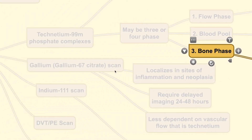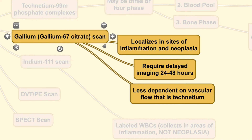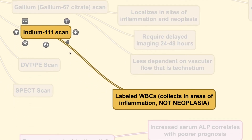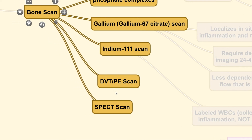Another radioactive agent is gallium-67 citrate, which localizes in sites of inflammation and neoplasia, requires delayed imaging of around 24 to 48 hours, and is less dependent on vascular flow than technetium. The third commonly used agent is indium-111, where white blood cells are labeled. Indium-111 is collected in areas of inflammation rather than neoplasia, making it useful to confirm a lesion is not neoplastic. Other scans employing bone scanning principles include DVT scans and SPECT scans available in certain medical centers.